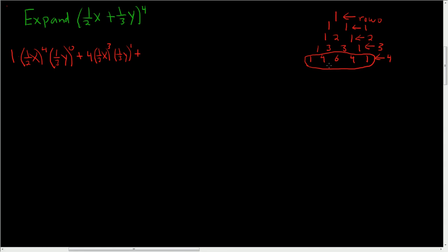Plus the next coefficient is 6. And then 1 half x squared. And then 1 third y squared. It's really easy to mess up in this next step. And again, you'll notice the pattern. 4, 3, 2, 0, 1, 2.